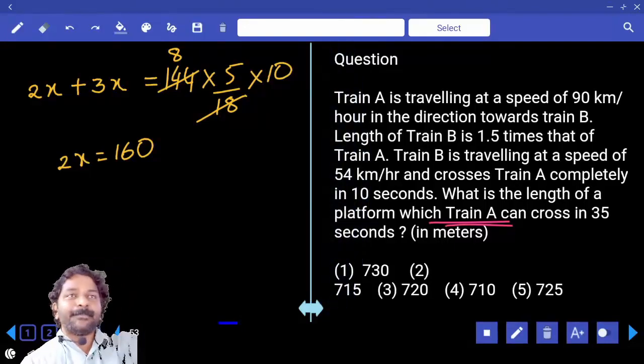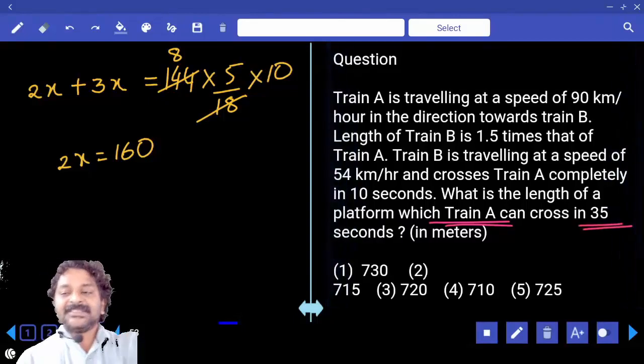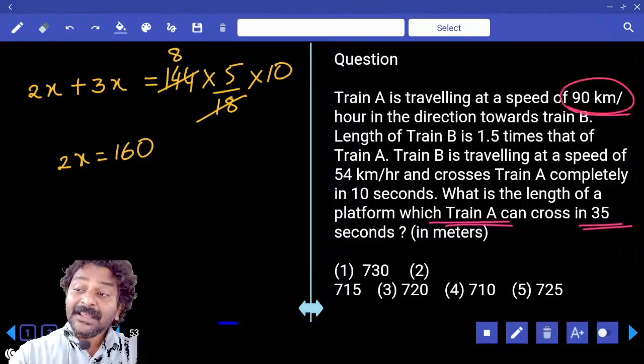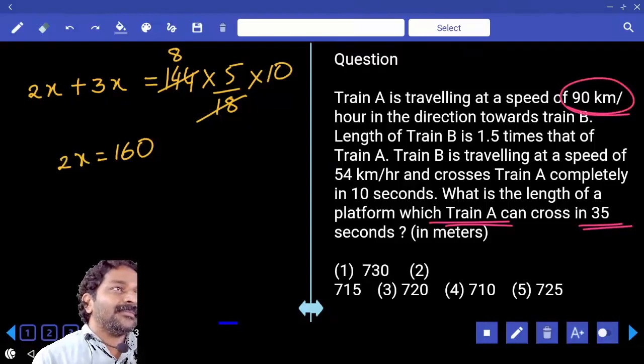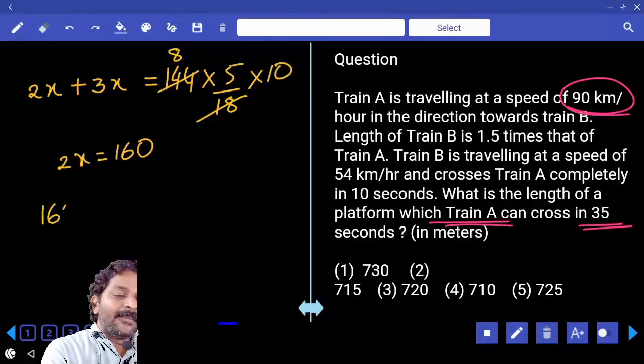If a train crosses a platform, distance covered is train length plus platform length. Let me take platform length as y which is equal to speed into time.